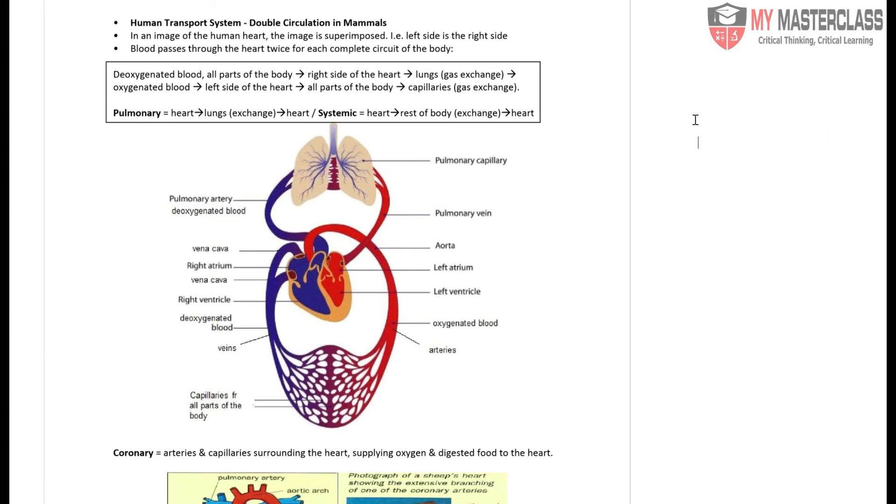Double circulation means let's trace the blood itself. Deoxygenated blood coming back is going to go into the heart. This same blood drop is going to leave out to enter the surroundings of the lungs, and then the same drop of blood is going to come back to the heart.